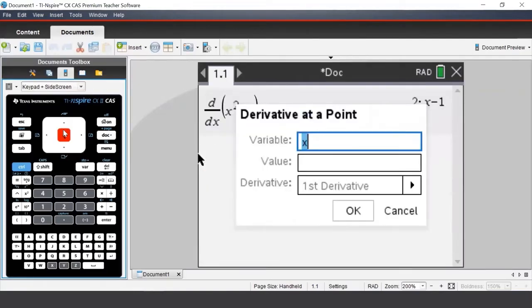In this pop-up menu, we enter which variable we would like to differentiate with respect to, and the value we would like to evaluate it at. So we'll enter in 3.